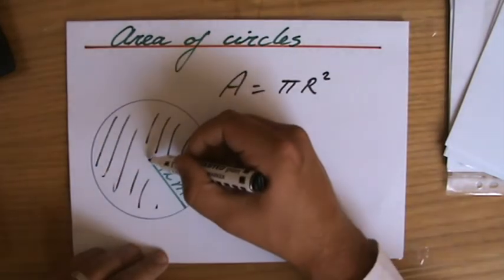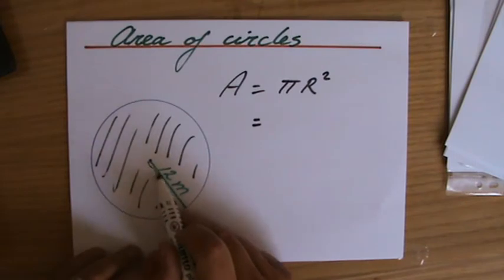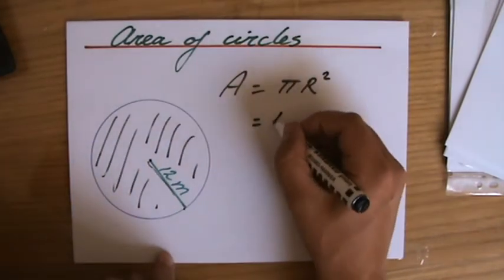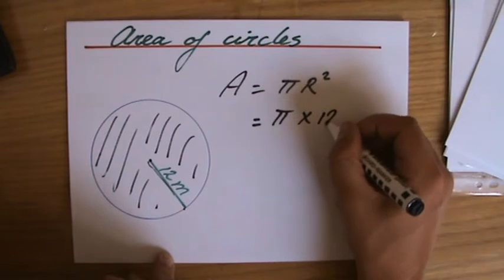And the radius, the length of the line from the midpoint of the circle to the circumference, in this case it's 12. So pi times 12 squared.